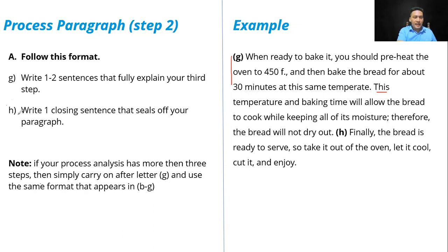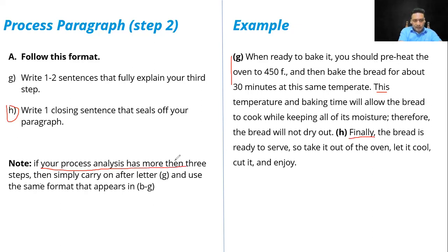Letter H: write one closing sentence that seals off your paragraph. Using the transitional phrase 'finally,' for example: 'The bread is ready to serve — take it out of the oven, let it cool, cut it, and enjoy.' That is the final closing sentence. Note: if your process analysis has more than three steps, simply carry on after letter G and use the same format as letters B through G.